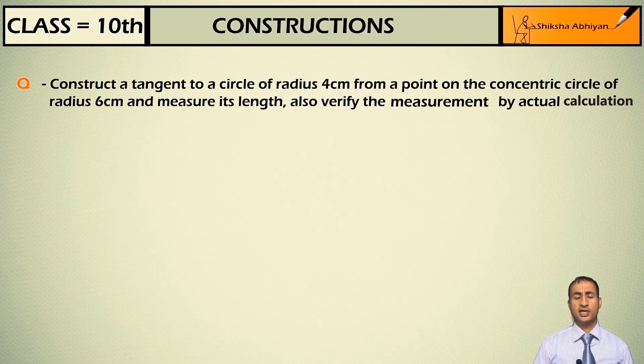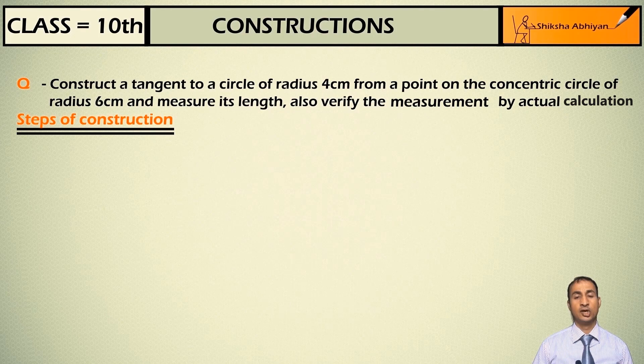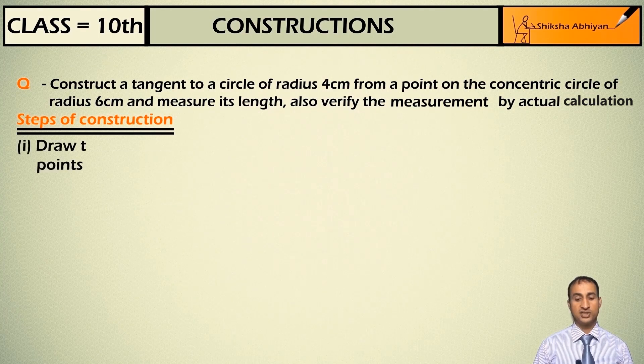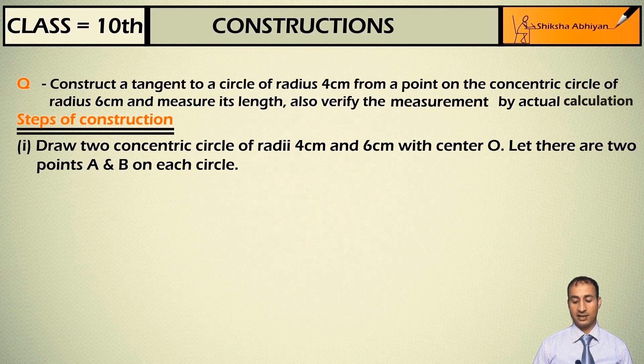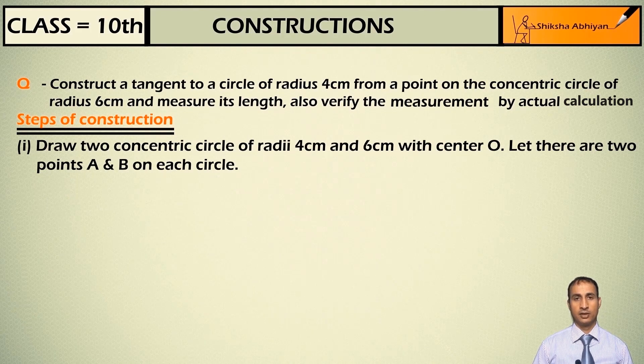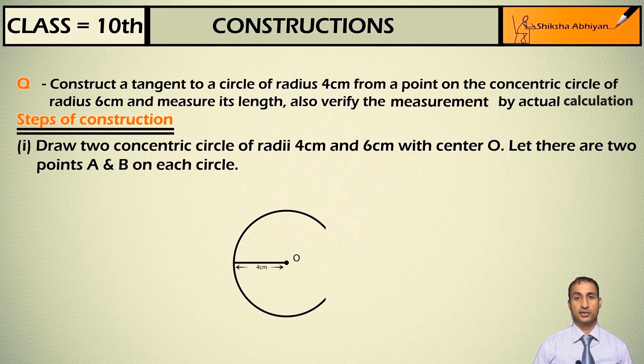So students, for this construction you have to draw two concentric circles of radius 4 cm and 6 cm. Draw two concentric circles of radii 4 cm and 6 cm with center O, and there are two points A and B on each circle.